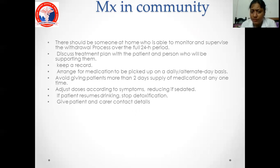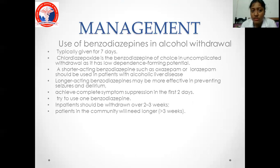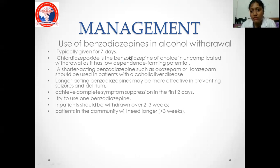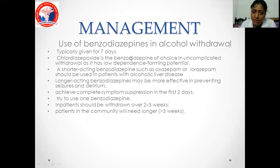Preparation for detoxification and management: benzodiazepines are used in alcohol withdrawal. Chlordiazepoxide is the benzodiazepine of choice — it is metabolized by the liver. For compensated liver disease, chlordiazepoxide can be used; for decompensated liver disease, shorter-acting benzodiazepines such as lorazepam or oxazepam are used. Longer-acting benzodiazepines are helpful in preventing seizures. Inpatient withdrawal should ideally occur over one week. Dosing regimens include fixed dose — for mild dependence, 25 to 100 mg of chlordiazepoxide; for moderate dependence, more than 100 mg.